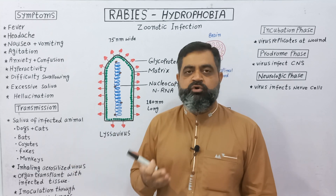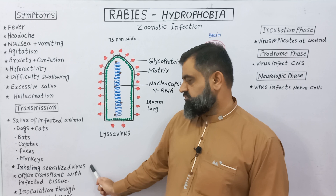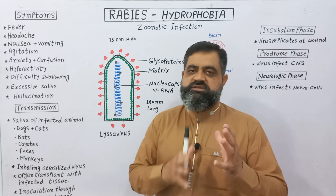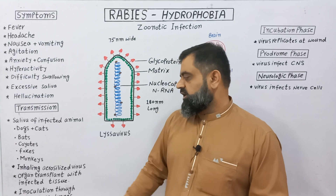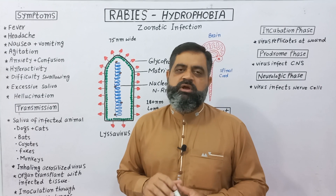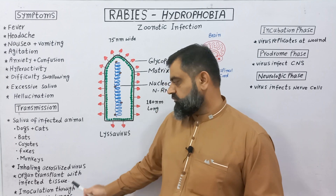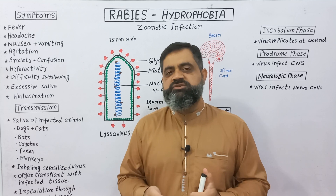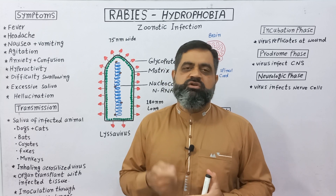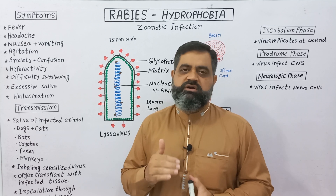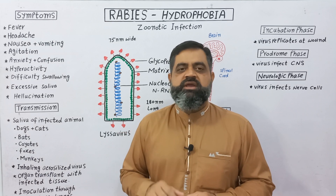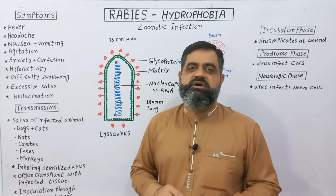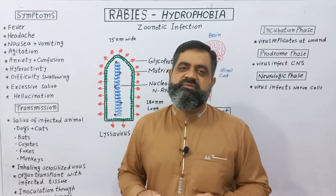This virus can also be airborne and transmitted by inhaling aerosolized virus present in the air. It can also spread through organ transplantation — if a person with rabies virus in the liver or kidney donates those organs, the recipient can develop rabies. Inoculation through mucous membranes can sometimes also cause rabies infection.